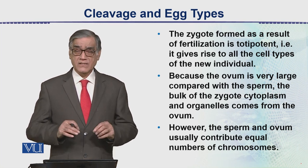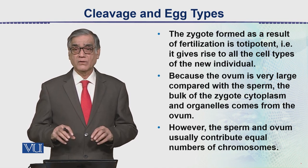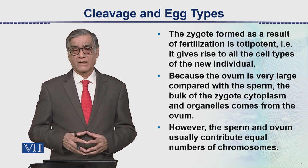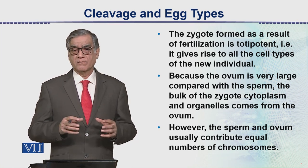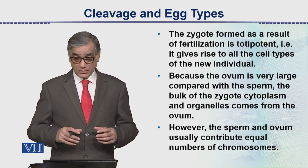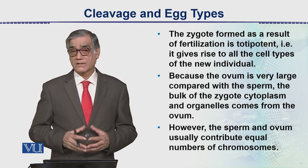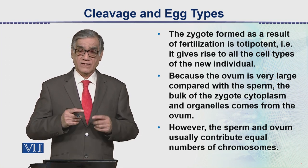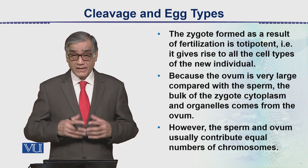But in cleavage, when a cell divides, its size decreases and it begins to divide again. So the group of cells that form are relatively much smaller in size compared to the original parent cell. This is the difference between normal cell division, which is mitosis, and cleavage. The process of cleavage always starts after fertilization.